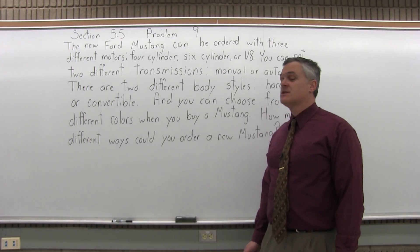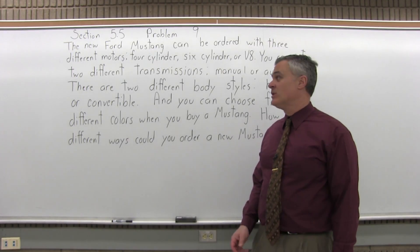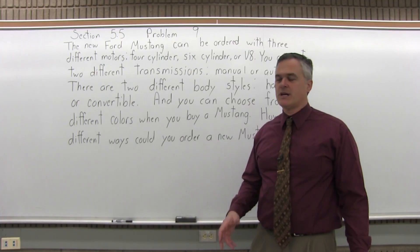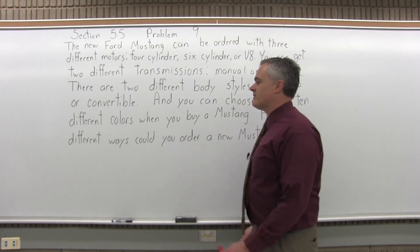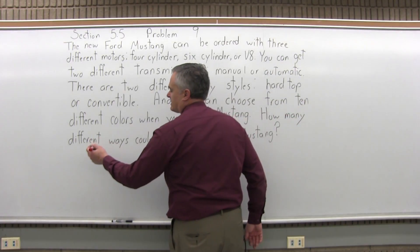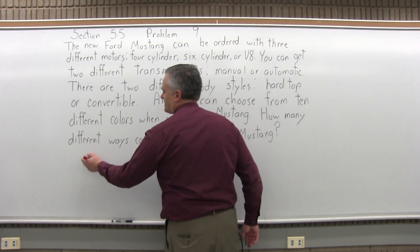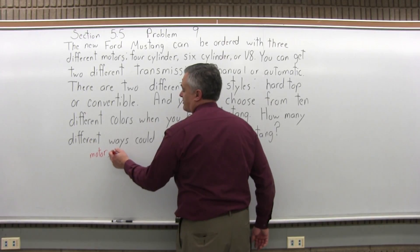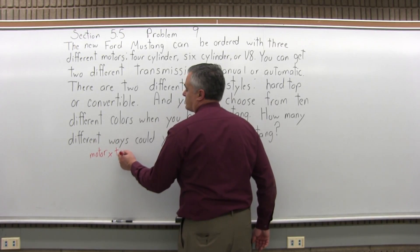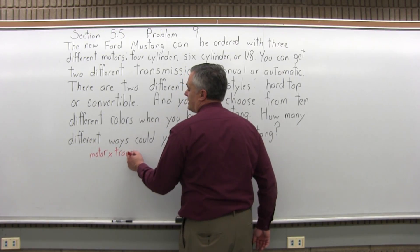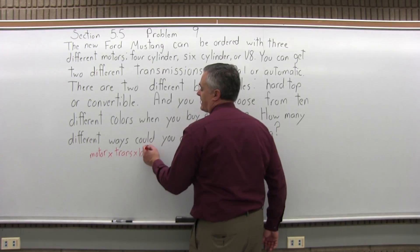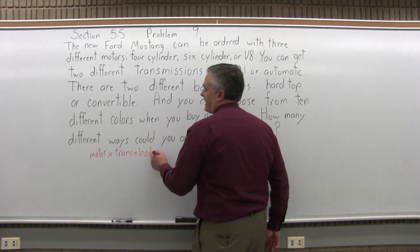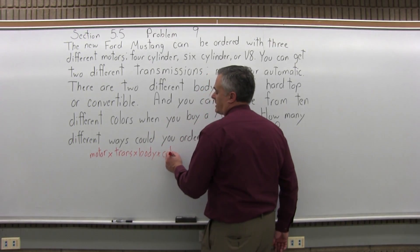This is a problem for the multiplication principle. You could start listing them out and try to count them, but that's very difficult. This is a multiple-step process and you have to see how many choices you have at each step and then multiply them together. So there's a step to choose the motor, a step to choose the transmission, a step to choose the body style, and finally a step to choose the color.